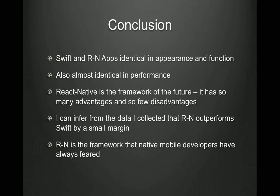I built two apps — one in Swift and one in React Native — that were both almost identical in appearance and function. As you can see from my data, they were also almost identical in performance. React Native is the framework of the future. It has so many advantages and so few disadvantages: it's written in JavaScript, has one codebase that can be deployed to Android and iOS, and it's faster and cheaper to produce. I can also infer from the data I collected that React Native won two out of the three performance categories, and it outperforms Swift by a small margin, especially so in memory utilization. React Native is the framework that native mobile developers have always feared.